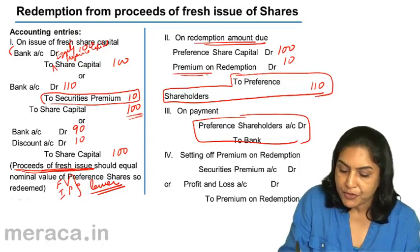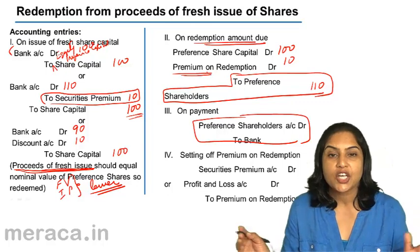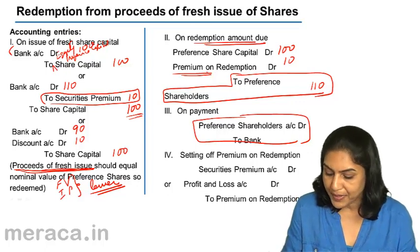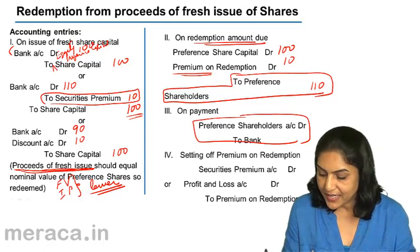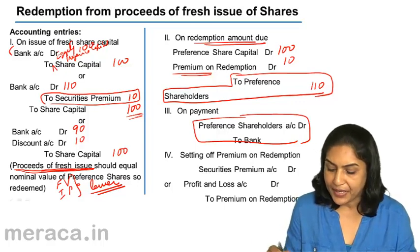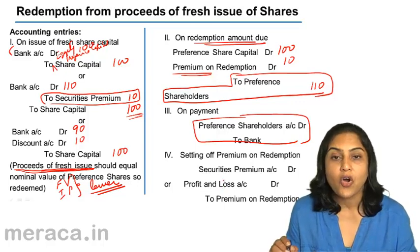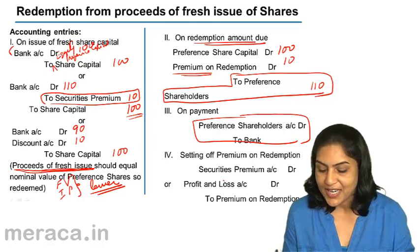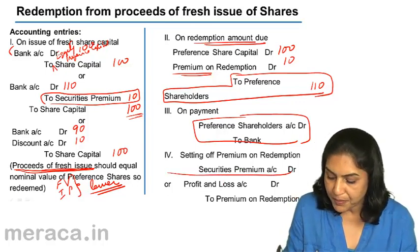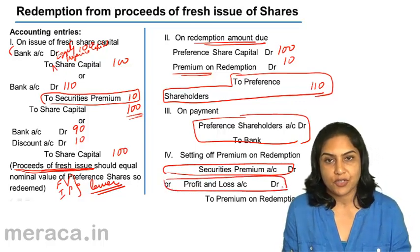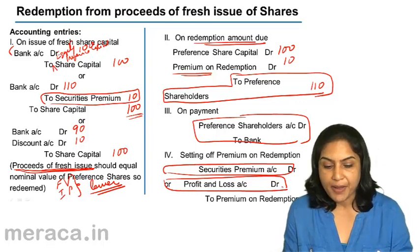If there is a premium on redemption, this is a capital loss and it should be written off — it cannot be carried in the books. It should be set off by debiting either the profit and loss account or the securities premium account. The premium on redemption of preference shares is set off against securities premium if any; if not, we take it to the profit and loss account. So, the accounting entries for redemption from proceeds of a fresh issue are fairly simple.